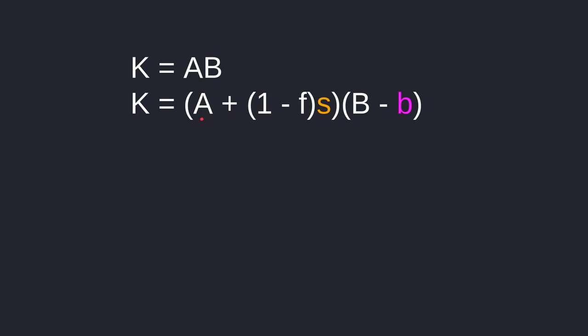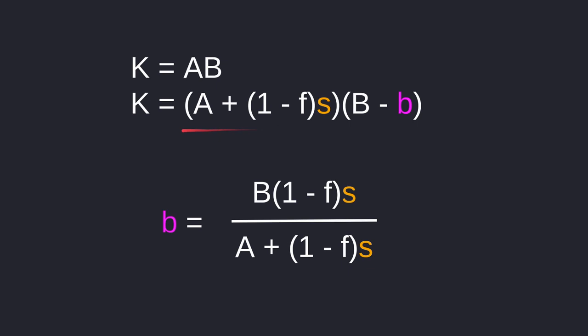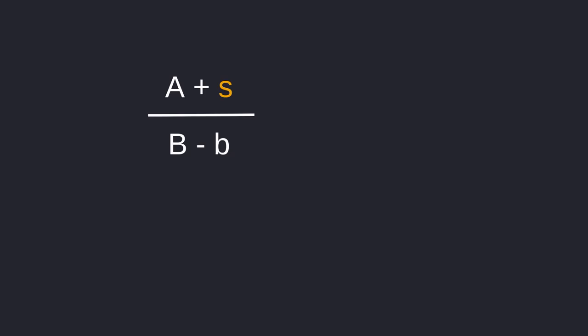We're adding S minus some fee amount T onto A — so this is the percentage of S that we're adding on to A. From the B side, we are subtracting lowercase b amount of B tokens. From this equation we can solve for b in terms of S. We will come back to this equation later. So we know what b is in terms of S — let's now find what S is.